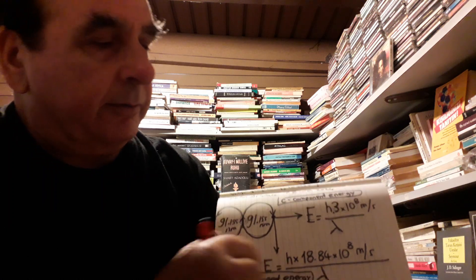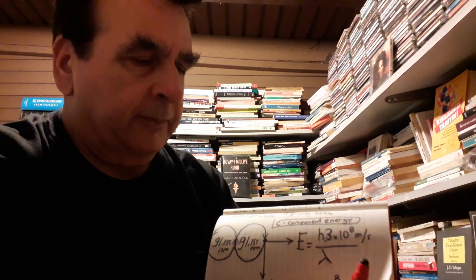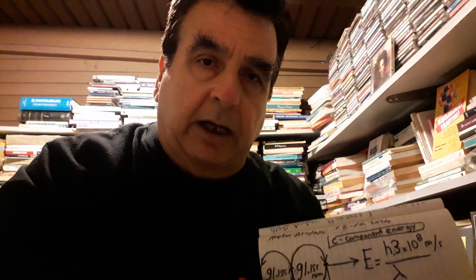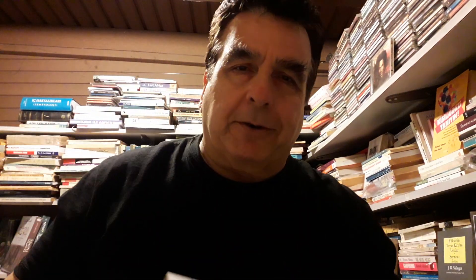Then there are two components, and accepted physics theories are not aware of this. They see half of this reality wrongly.